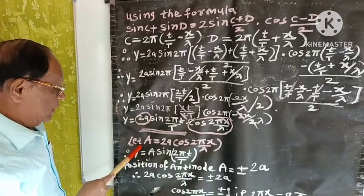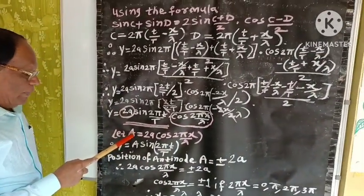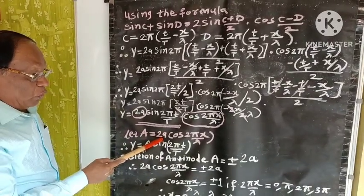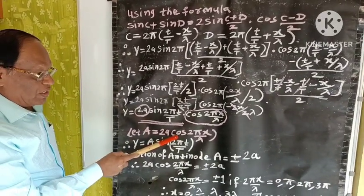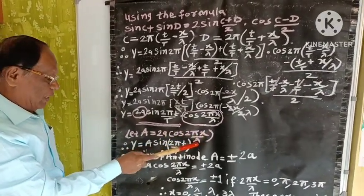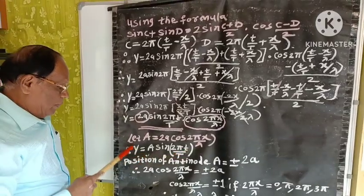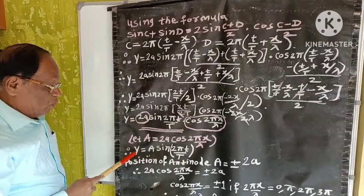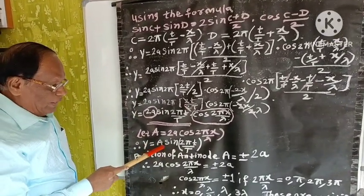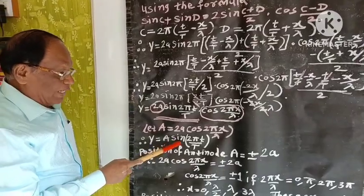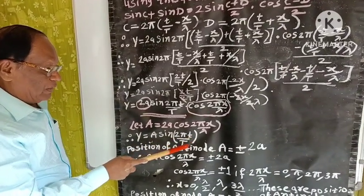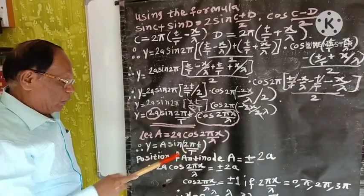Let capital A = 2a cos (2πx/λ). Therefore, the above equation becomes Y = A sin (2πt/T).